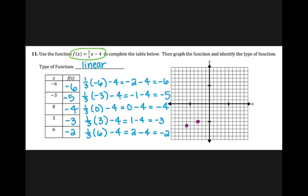Zero, negative four. Then three, negative three — so I'm moving to the right three and down three.